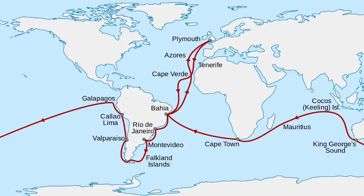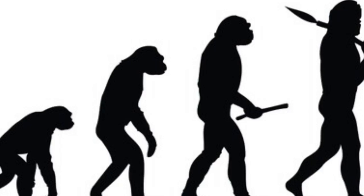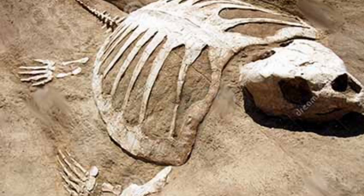Darwin's journey began in 1831 when he was invited to sail on the HMS Beagle's five-year voyage. Evolution is a change over time — the process by which modern organisms have descended from ancient organisms. Fossils are preserved remains of living things.